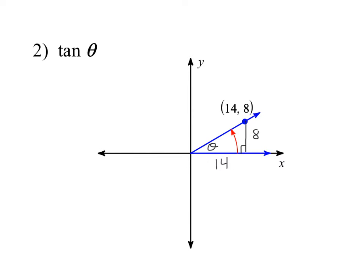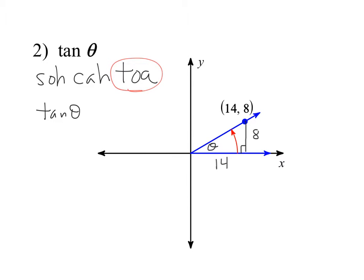Going back to SOHCAHTOA, we're looking for tangent, which is opposite over adjacent. The good news is we don't need the Pythagorean theorem here. From the reference angle, the opposite side is 8 and the adjacent side is 14. So tangent of theta equals 8 over 14, which reduces by dividing both by 2 to give us 4/7. The answer is 4/7.